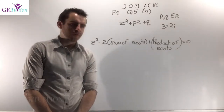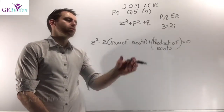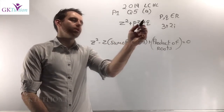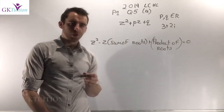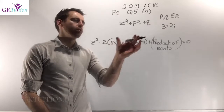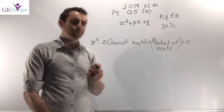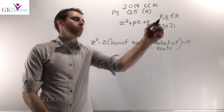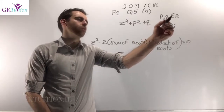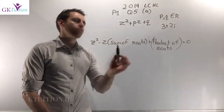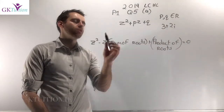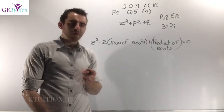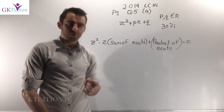In the first part of this question, we're introduced to the quadratic equation z² + pz + q. We're told that one of the roots is 3 + 2i, and most importantly, we're told that p and q are elements of ℝ — in other words, p and q are real numbers — and we're asked to find the value of p and the value of q.